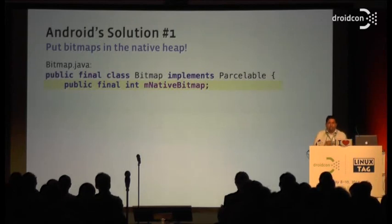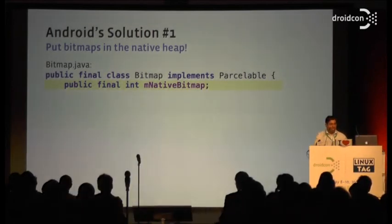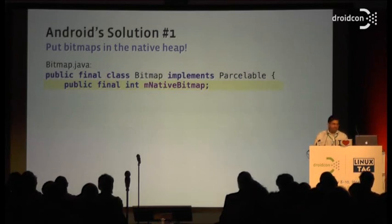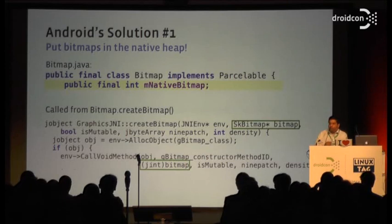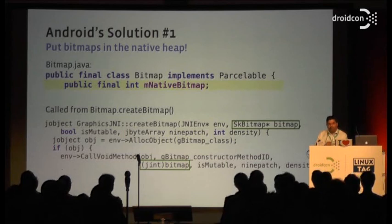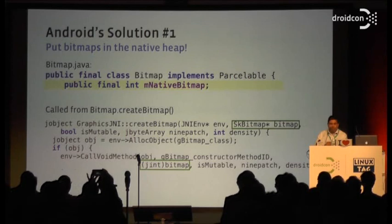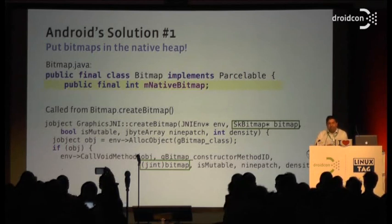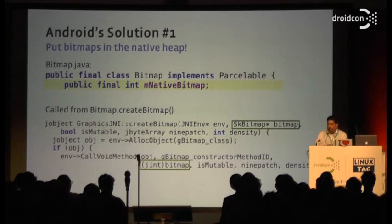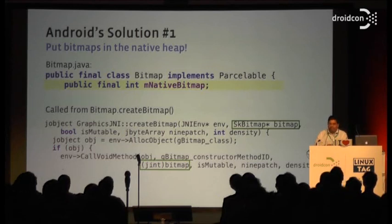The very first solution in Android 1.0 was: don't put bitmaps in the Dalvik heap, put them in the native heap. If you look at the definition in the Android source of a Bitmap class, there's a field called mNativeBitmap. The entire graphics canvas library in Android wraps the Skia C++ library. All Android does is take an SkBitmap, cast it to an integer, and give that integer back to Java. So the actual pixel data lives in native memory.